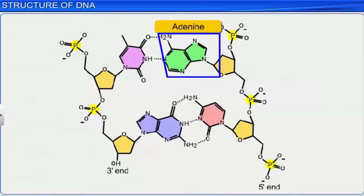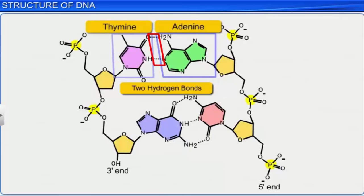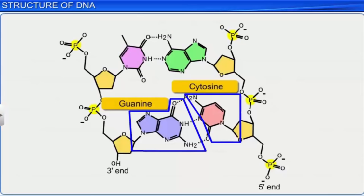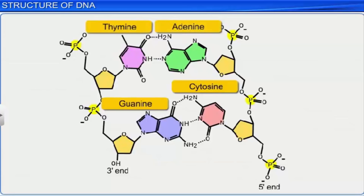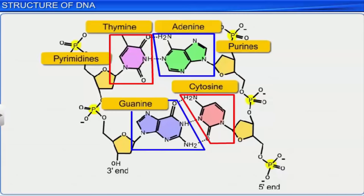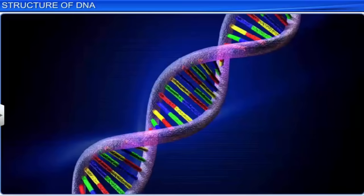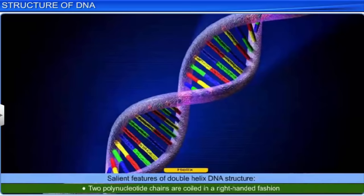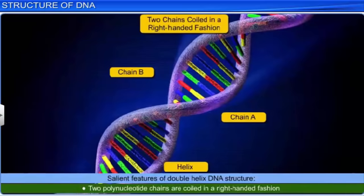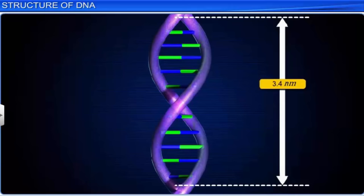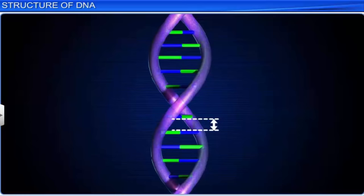Adenine is bonded with thymine from the opposite strand with 2 hydrogen bonds, and vice versa. Similarly, guanine is bonded with cytosine with 3 hydrogen bonds. Because of this structure, a purine always comes opposite to a pyrimidine, which results in a uniform distance being maintained between the two helix strands. Another salient feature is that the two chains are coiled in a right-handed fashion. Therefore, the pitch of the helix is 3.4 nanometers, and each turn consists of about 10 base pairs, giving a distance between base pairs of 0.34 nanometers.